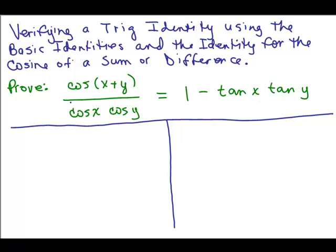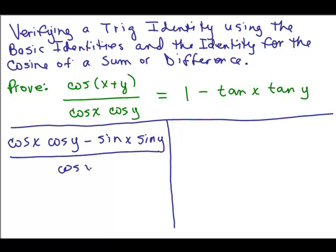So let's start on the left-hand side. I see I've got the cosine of X plus Y. Let's use the identity for the cosine of X plus Y. That will be cosine X cosine Y minus sine X sine Y, and that's all over cosine X cosine Y.